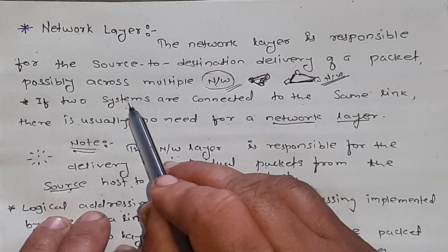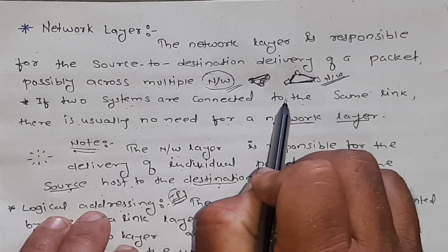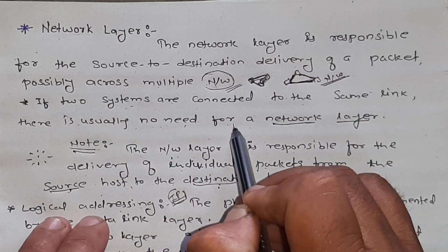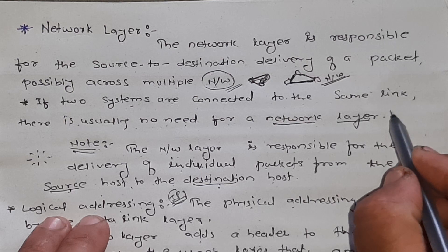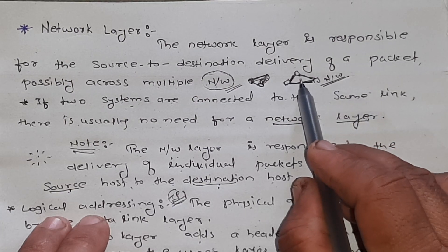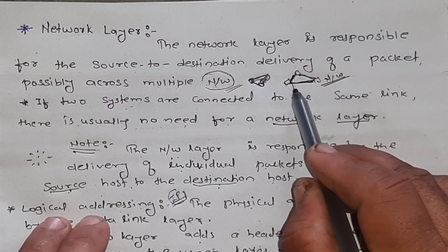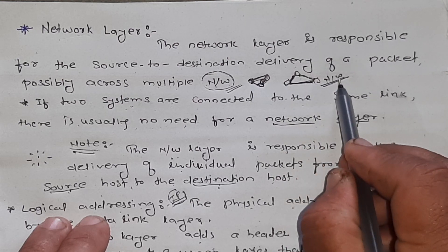If two systems are connected to the same link, there is usually no need for a network layer. We have seen here that three systems are connected to each other. So, here is the network layer.